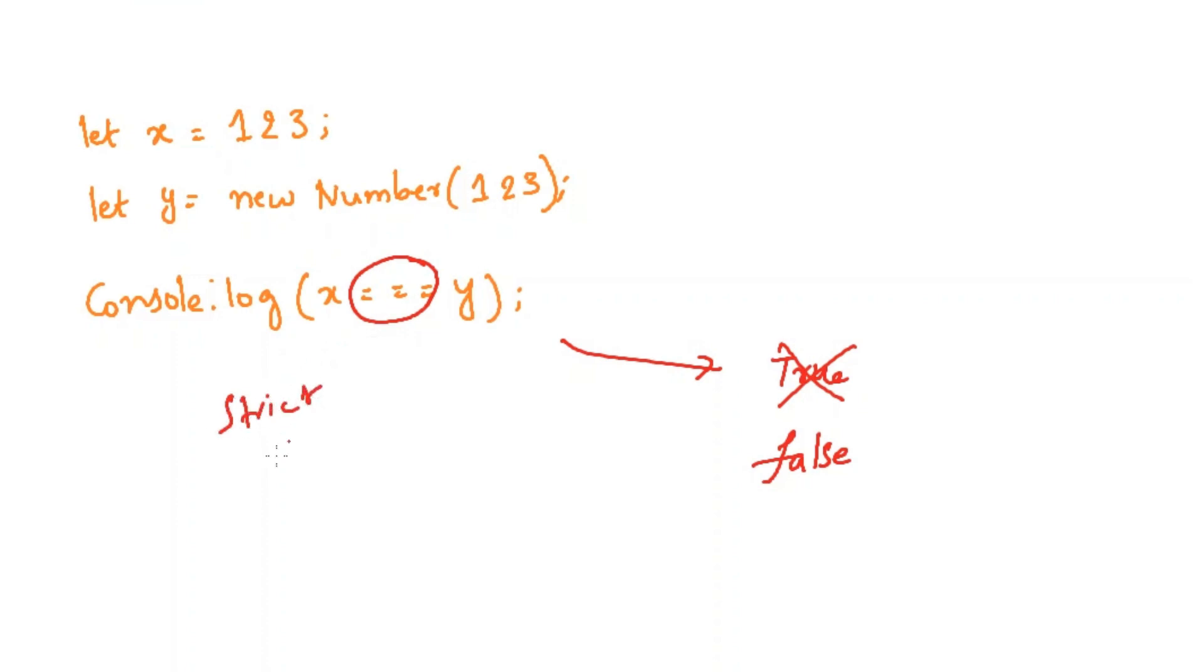What this strictly equality operator will do is it will check both the values as well as the data types. If you see here, the value of x is 123 but the data type is number.